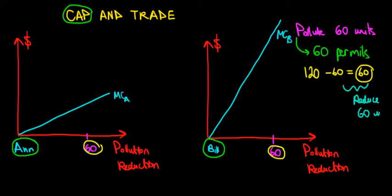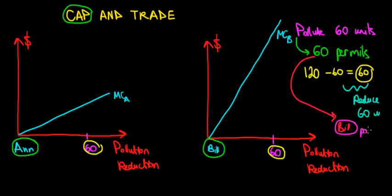For the sake of the example, let's say Bill has all 60 permits. That means Bill can pollute 60 units, so his required pollution reduction is zero units. There is no cost for him to reduce pollution because he doesn't have to.